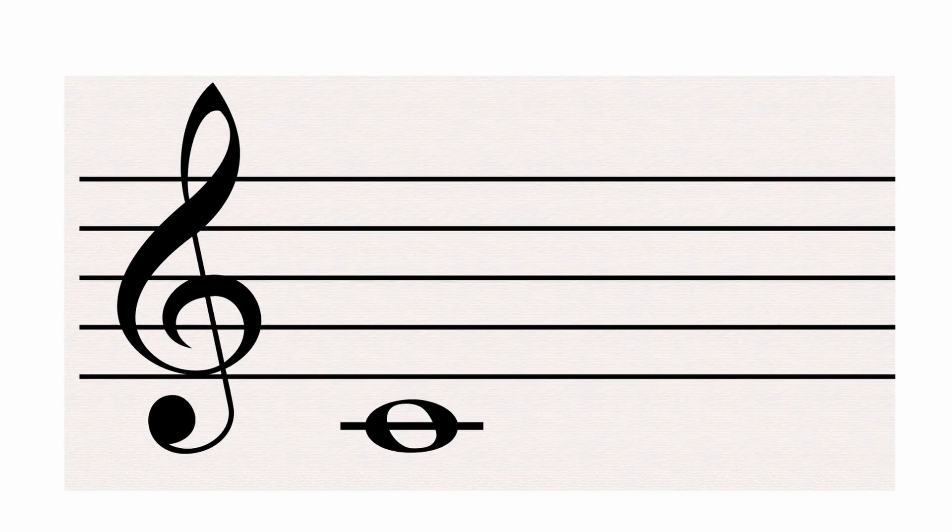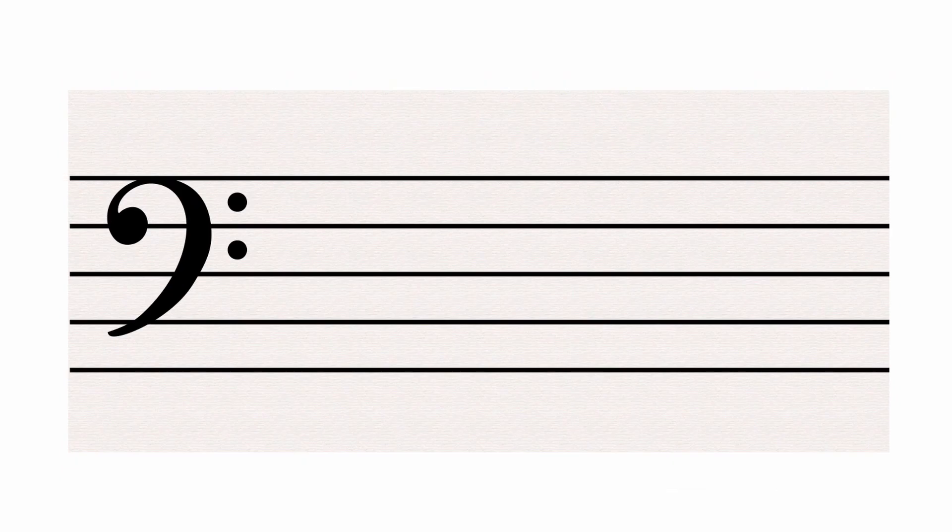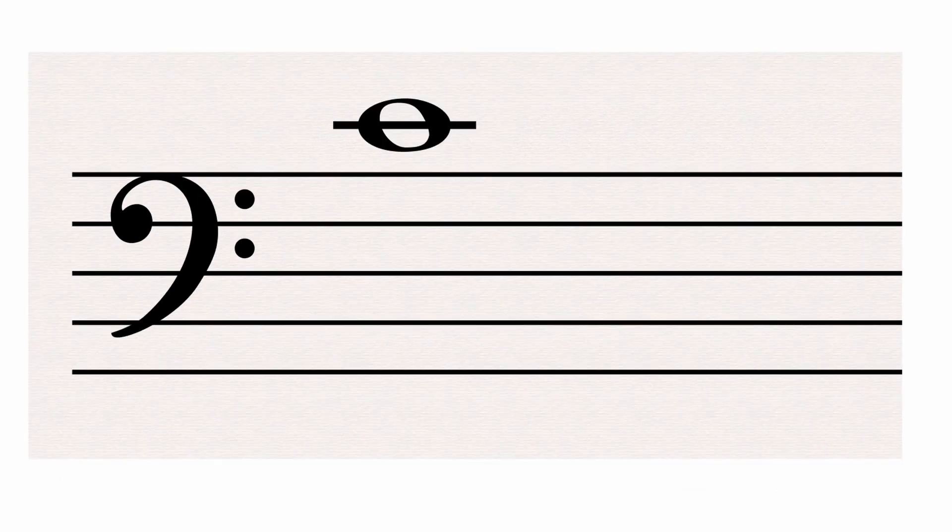Here's the treble clef. In the treble clef, middle C is located one ledger line below the staff. Here's the bass clef. Middle C is located one ledger line above the staff, completely changing how you read the notes.